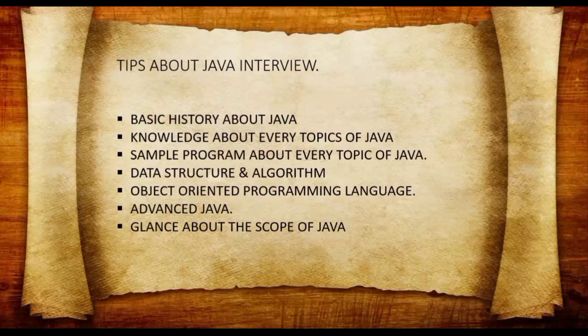Next comes data structures and algorithms. If a program is written in 100 lines, it can be written in 70 lines — it all depends on how you code. The complexity and structure of the algorithm matters. Next comes object-oriented programming language, which is the core part of Java. This is the topic the interviewer will never miss asking you, so please be thorough about OOP concepts.